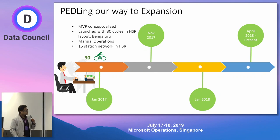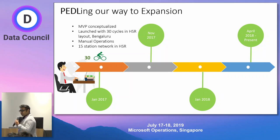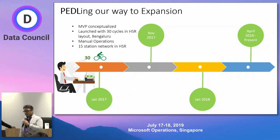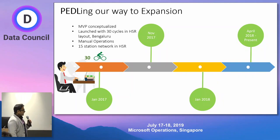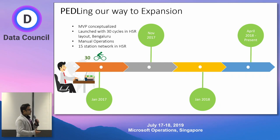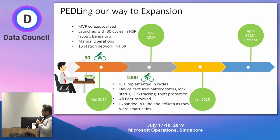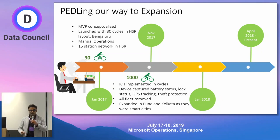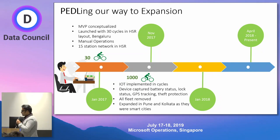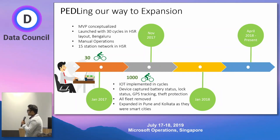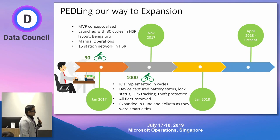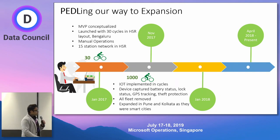A bit of context about how we grew as a business. We launched as a minimum viable product with only 30 bicycles in a part of Bangalore called HSR. At that point we did not have IoT because we just wanted to test whether people wanted to use the service. In another six months, our experiment was successful and we launched 1,000 more bicycles. This is where we implemented IoT to track our bicycles.